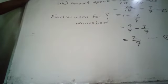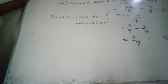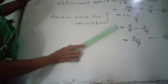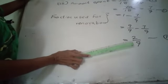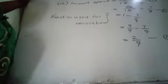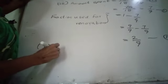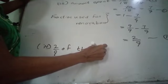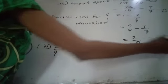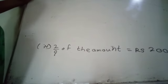Fourth part: if the renovation cost was 20,000 rupees, find the total amount Mr. Kitsiri donated. The renovation cost of 20,000 rupees equals two-ninths of the total amount Mr. Kitsiri donated.